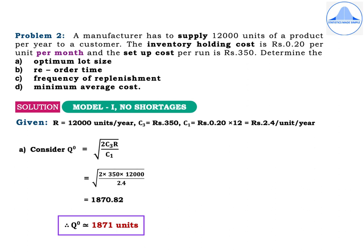The optimum lot size: Q⁰ = √(2C₃R / C₁) = √(2 × 350 × 12,000 / 2.4) = 1870.82, so Q⁰ ≈ 1871 units after rounding off.